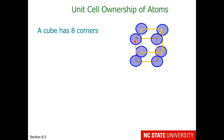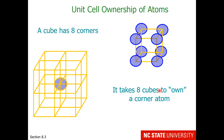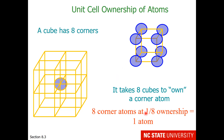The last type of site in a cubic unit cell is a corner. A cube has eight corners. If we consider an atom on the corner, how many unit cells share that corner? There are four in the back and four in the front. So it takes eight cubes to own a corner atom, and therefore each unit cell gets one eighth of that atom. There are eight corner atoms, each one eighth inside the unit cell, for a total of one atom.